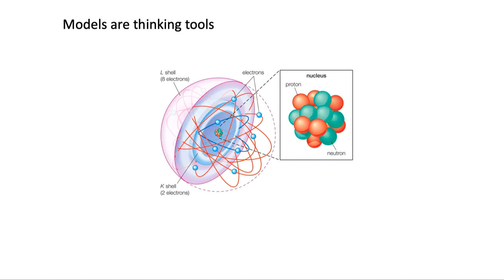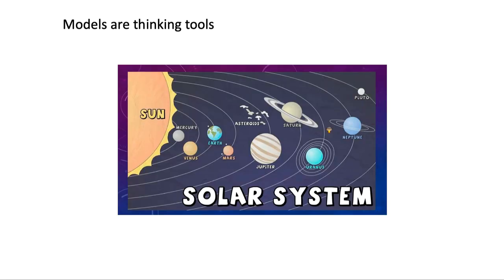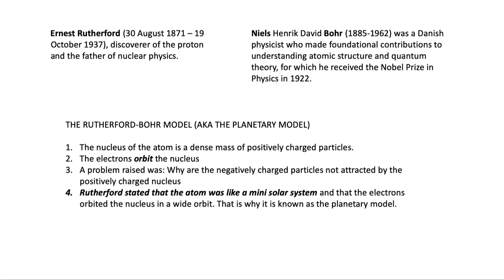We spoke before about the way that the atom has been modeled to look like the solar system. Niels Bohr developed this planetary model, and it was also Ernest Rutherford. Notice that you can really see how it works, because what Rutherford had to say about the atom — trying to think about why negatively charged particles just didn't collapse into the center of the atom — is that electrons orbit the nucleus.